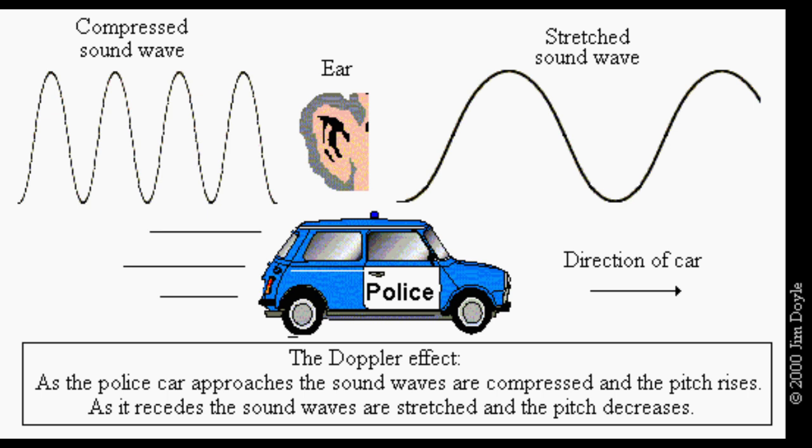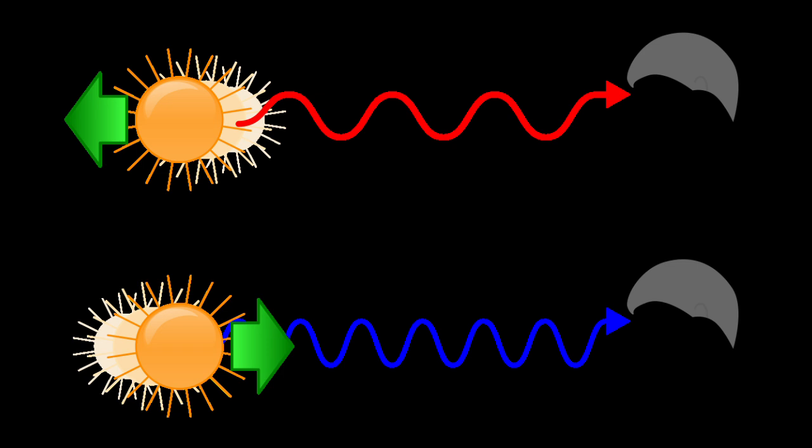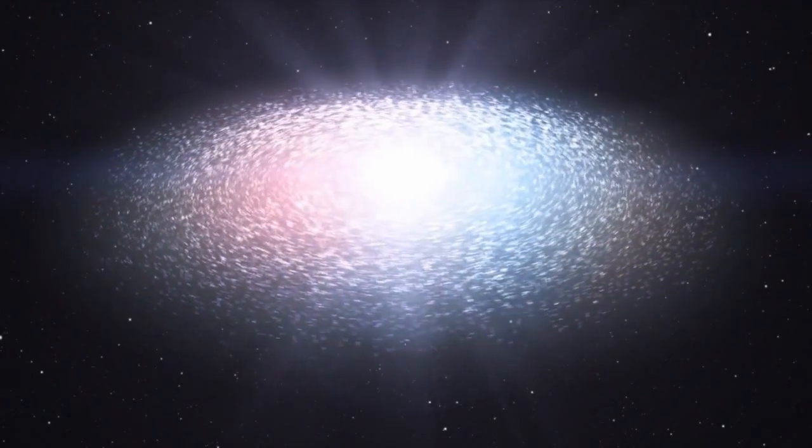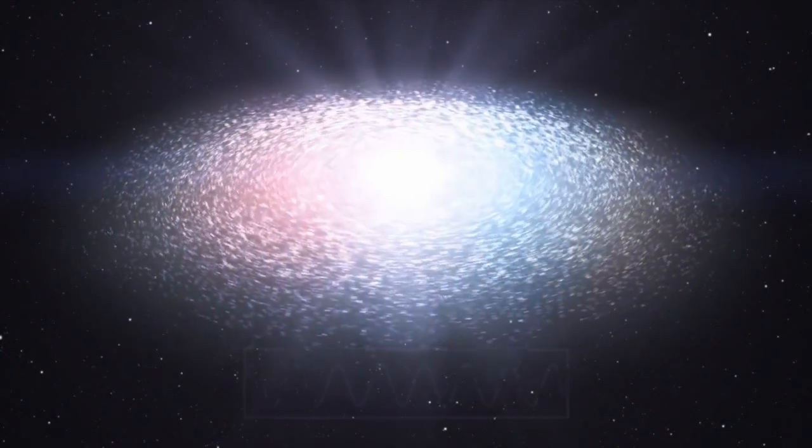Just as a police siren deepens in tone as it moves farther from your ear, so light deepens in frequency as it moves away from your eye. Low-frequency light is red, while high-frequency light is blue or purple.